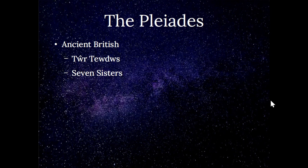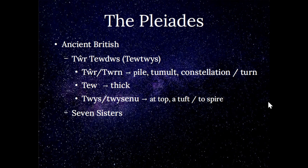In the ancient British tradition we have two names for the Pleiades. We probably all know the seven sisters, but let's look at the other name: Tuer Tuides. 'Tuer' or 'tueren' is a pile, a tumult, also the word for a constellation, and 'tueren' is a turn. 'Tu' is thick, maybe a large group of stars together, and 'tuiseni' is a top or tuft — but interestingly, 'tuiseni' also means to spire, which is the motion of our solar system around the Pleiades, turning in a spire.